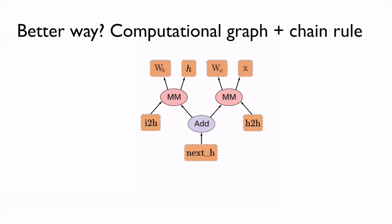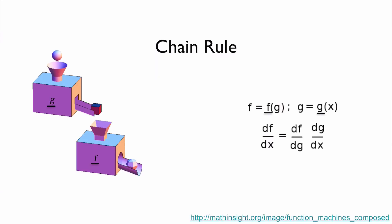A much better way is to just use the chain rule on the computational graph. Let me explain what the chain rule is first. Suppose we have two functions g and f, where g takes x as input and produces g as output, and g is then used as the input of f to produce f as output. What we want to compute is the gradient of f with respect to x. A better way is to divide them into two functions and compute the gradient one by one.